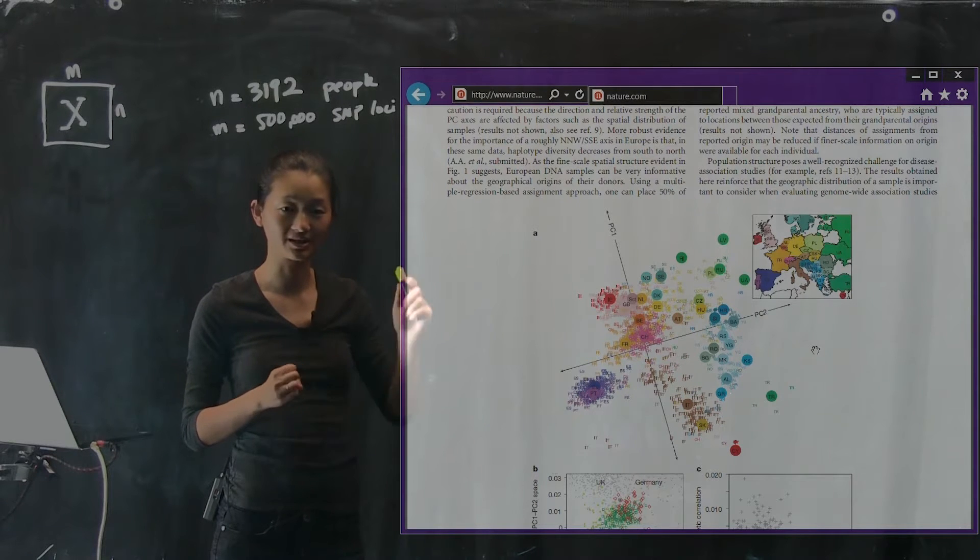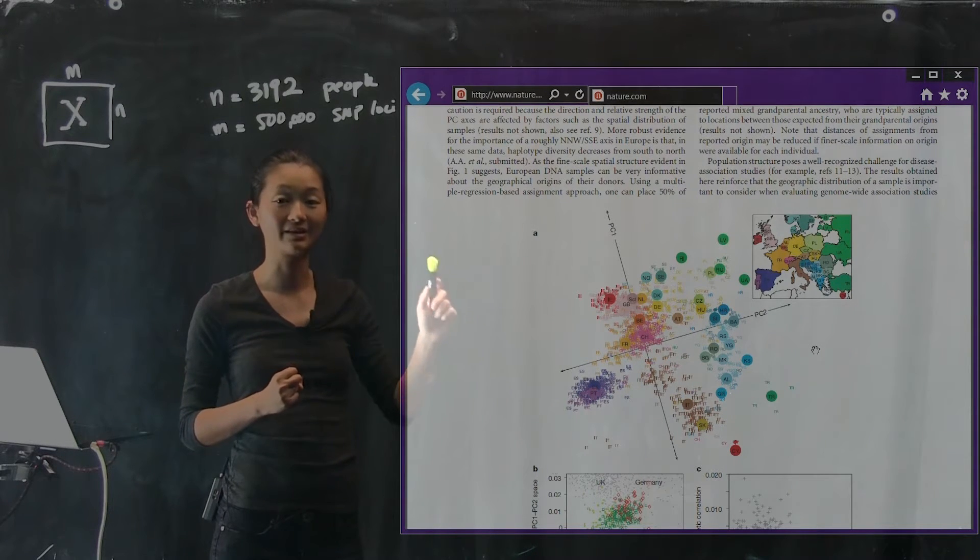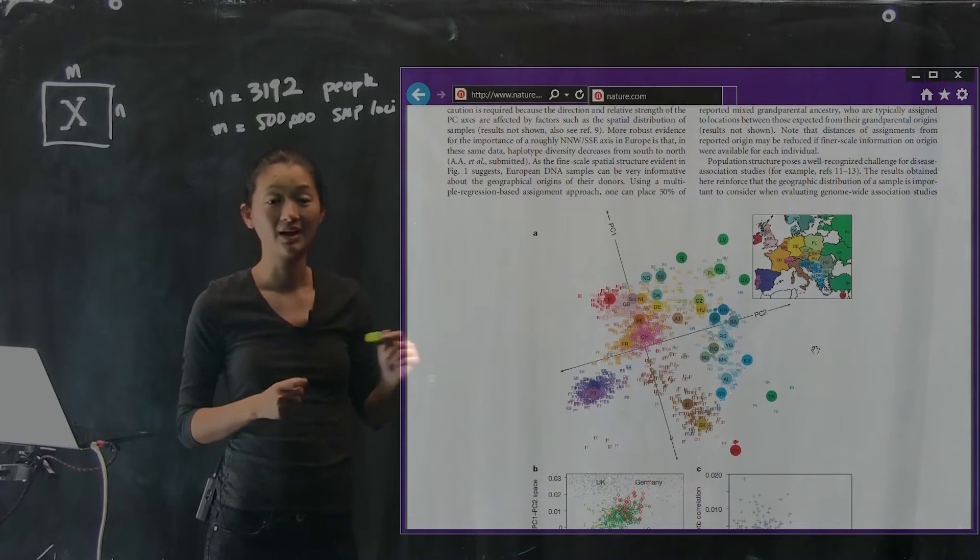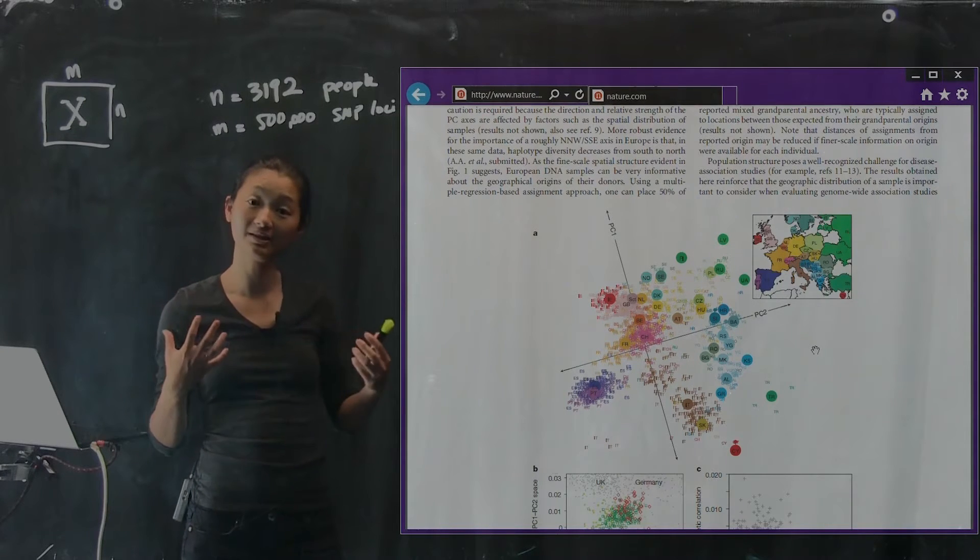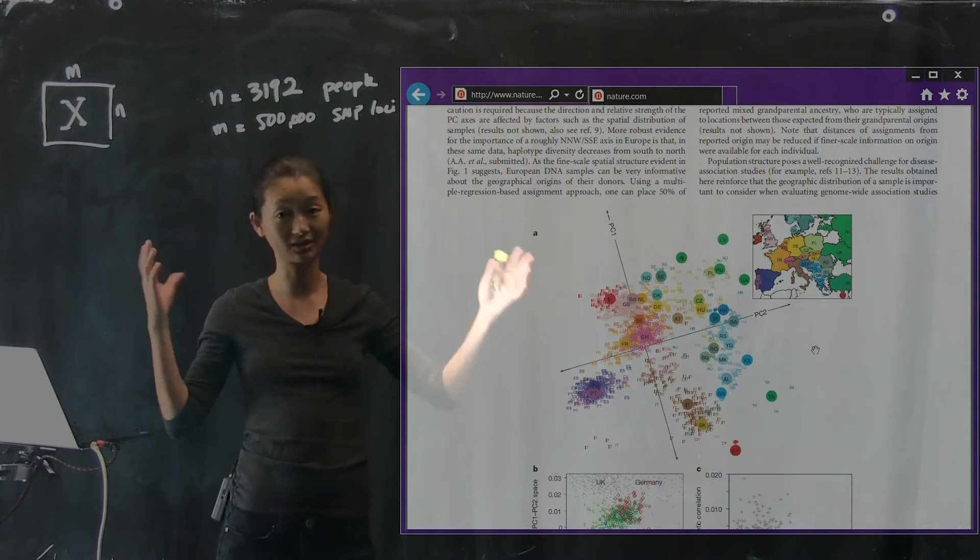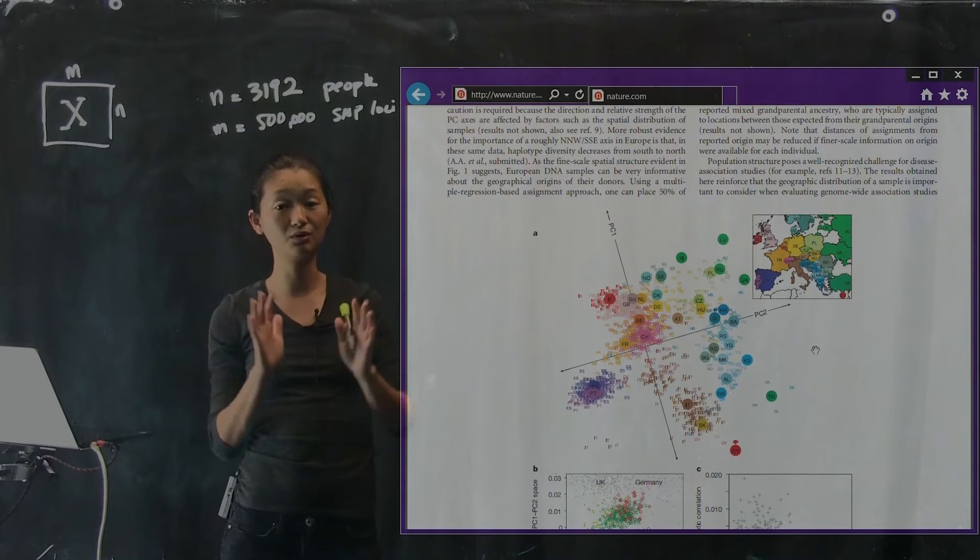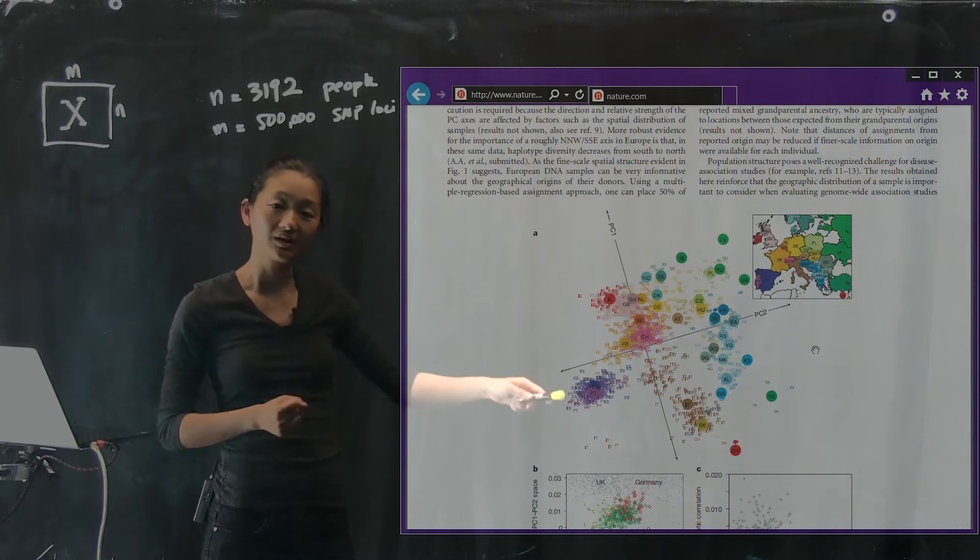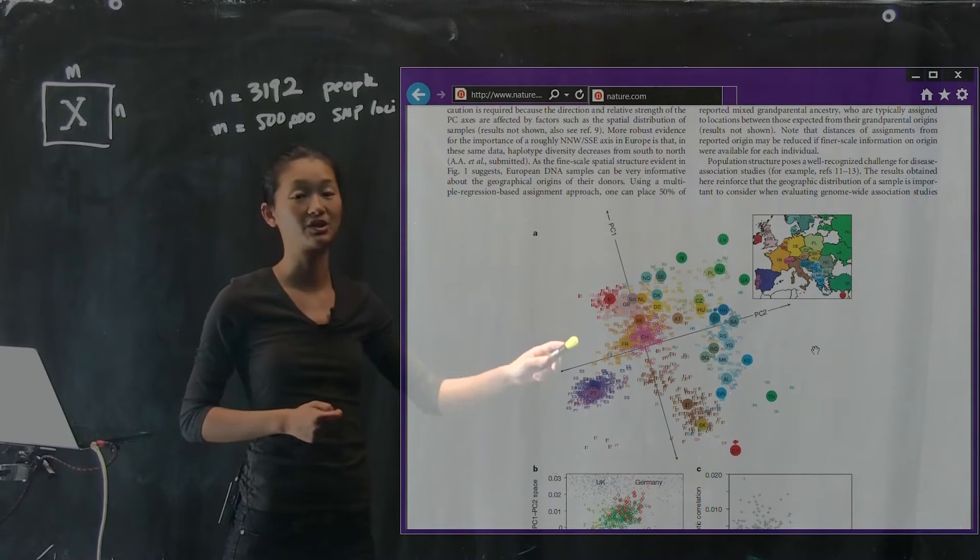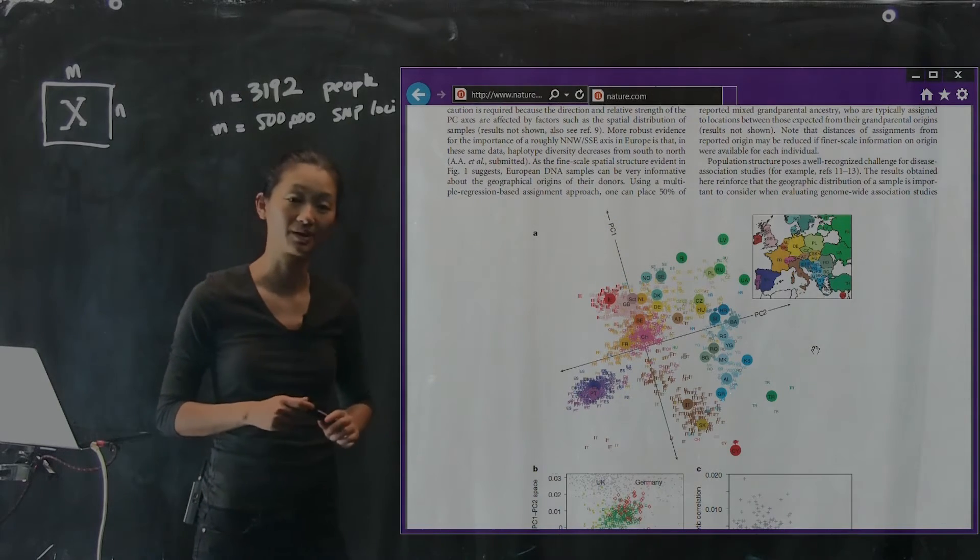And the various colors of these individuals, as well as the small letters which you can look at if you download the paper, correspond to a particular individual and their nation of ethnic origin. And what they discovered is that by this relatively simple analysis, reducing this large data set into two principal components, the relative location of these dots recapitulates the geography of Europe.